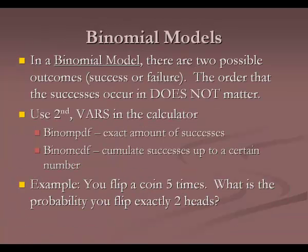A binomial model still has successes and failures, but unlike geometric models, the order in which success occurs does not matter. We don't do these by hand — it's more complicated than you'd think. We use the calculator with second VARS. Scroll down to find binomPDF and binomCDF. BinomPDF finds the exact number of successes; binomCDF accumulates successes up to a certain point. For example, flipping a coin five times — the two heads can occur anywhere in those five flips.